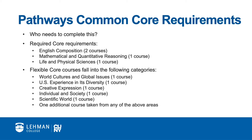All students pursuing a bachelor's degree at Lehmann who have not previously completed a bachelor's degree or an associate's in arts or science degree must complete the 30-credit Common Core. Students who transfer to Lehmann and have previously completed a bachelor's, associate in arts, or associate in science degree will be deemed to have automatically fulfilled these Common Core requirements.